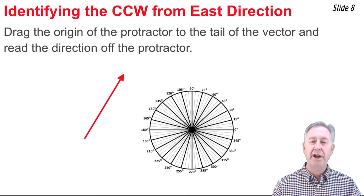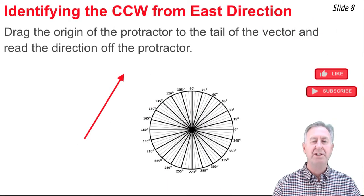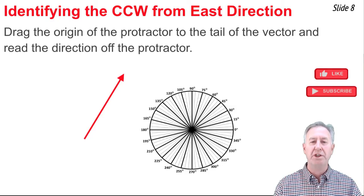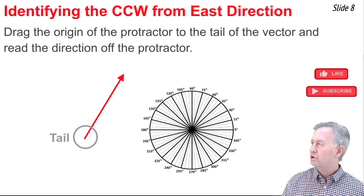If you have a vector and you have to determine its direction, it's an easy task if you have a protractor. All you have to do is drag the protractor so that the origin of the protractor matches up with the tail of the vector. When we say tail of the vector, we mean this point at the very bottom of the vector, as shown in the diagram.